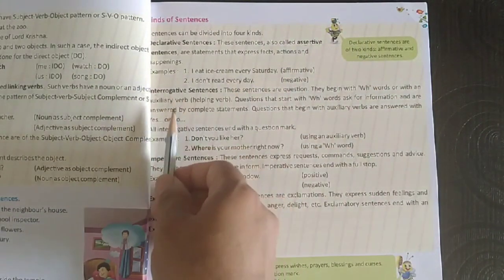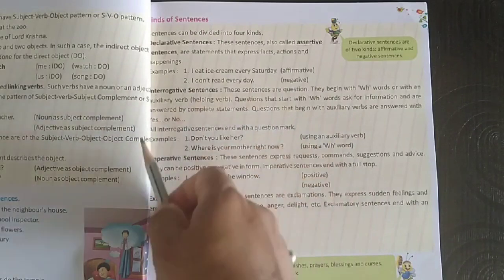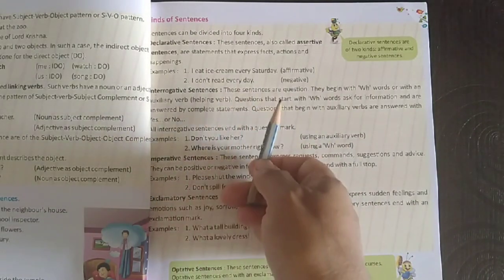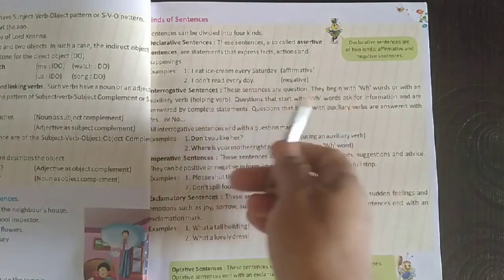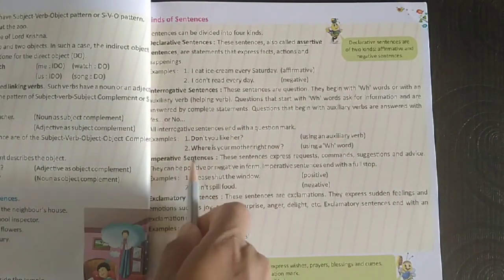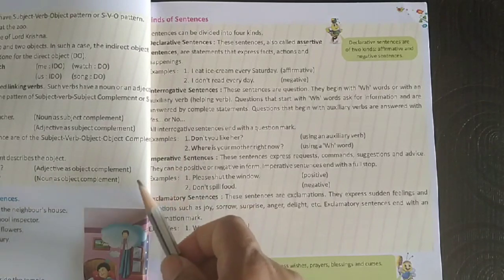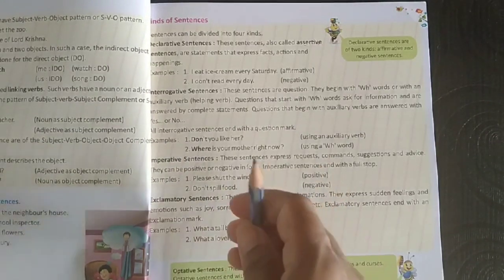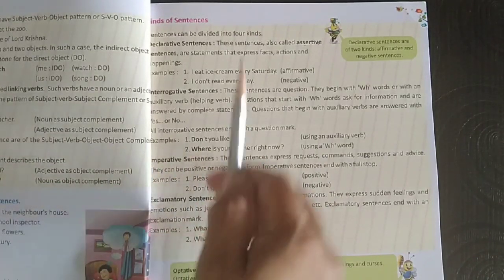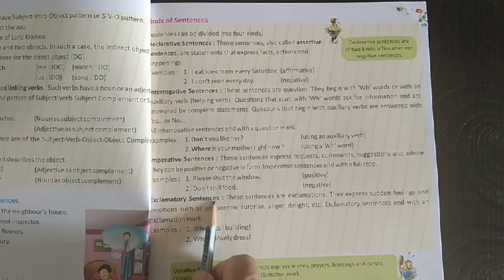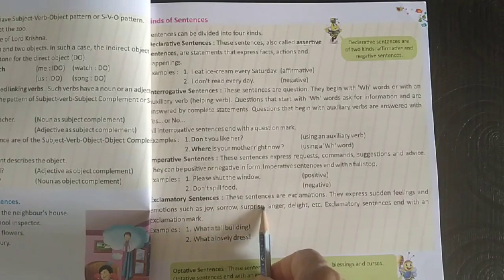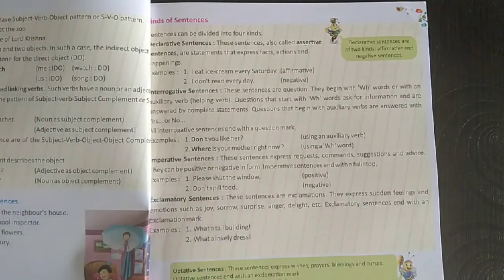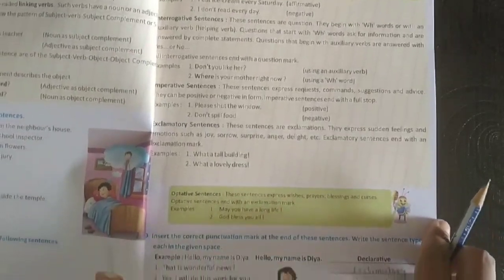Sentences which have question words, WH-words, or auxiliary/helping words are called interrogative sentences — some question is being asked. Third, imperative sentences express requests, commands, suggestions, or advice. Fourth, exclamatory sentences express sudden feelings and emotions such as joy, sorrow, surprise, anger, or delight.